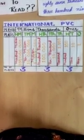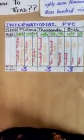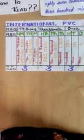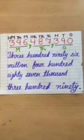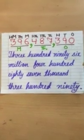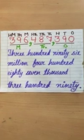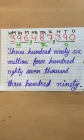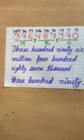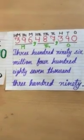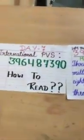We need to keep in mind that while separating the periods we have to put a comma after three digits, then after three digits, and then again after three digits. Here we have our number and we need to read its number name according to the International Place Value System. It is the same number we discussed earlier, and we are going to read it according to the International Place Value System.